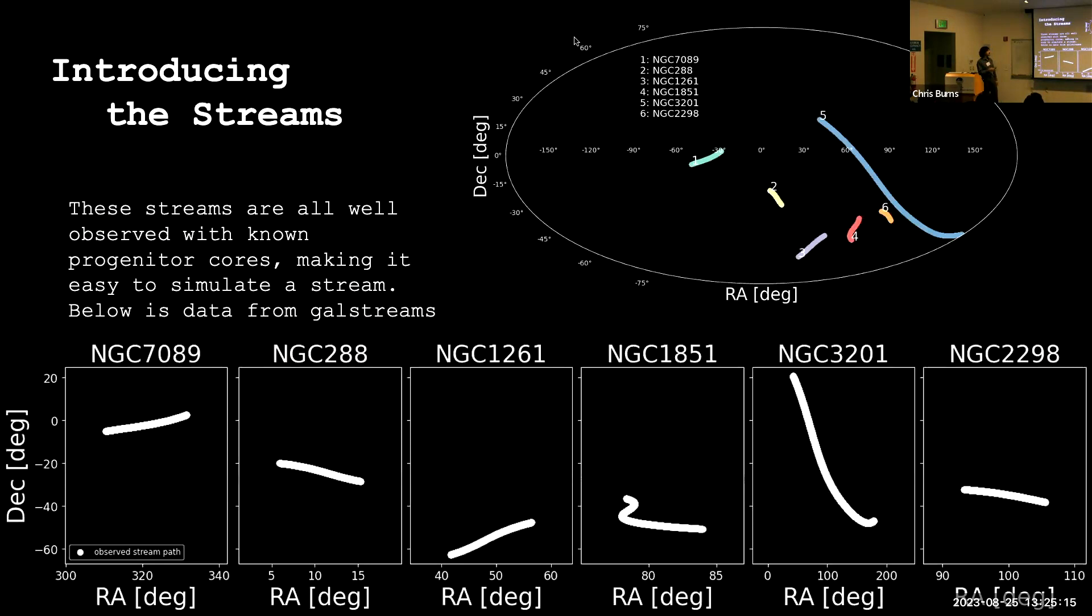So what we have here is a stream catalog from GAL streams. Here are the plots in the sky, and these are the six streams we are looking at. The reason we look at these ones is because they are well studied and have known globular cluster core progenitors, so they're easy to simulate. And this is what they look like in the sky.